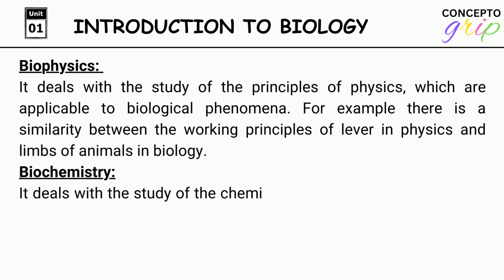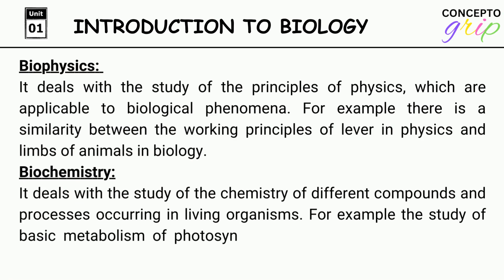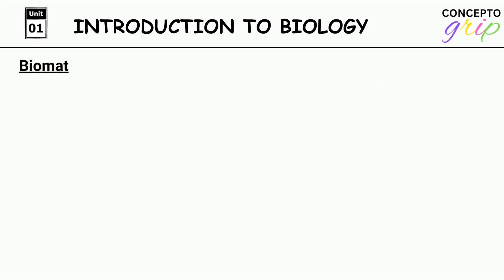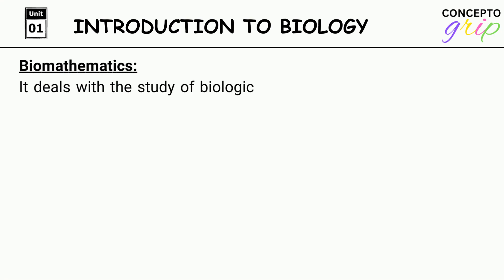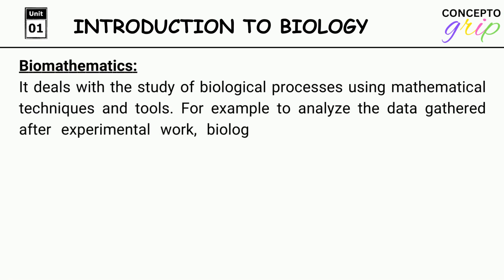Biochemistry: It deals with the study of the chemistry of different compounds and processes occurring in living organisms. For example, the study of basic metabolism of photosynthesis and respiration involves the knowledge of chemistry. Biomathematics: It deals with the study of biological processes using mathematical techniques and tools. For example, to analyze the data gathered after experimental work, biologists have to apply the rules of mathematics.